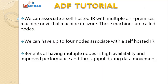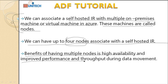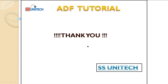We can associate a self-hosted IR with multiple on-premises machines and Azure virtual networks — these machines are called nodes. Setting up IR across multiple nodes gives you the high availability option: if one node is not available, the IR will be served from another node. You can set a maximum of four nodes associated with a single self-hosted IR. The benefit of multiple nodes is high availability and improved performance and throughput during data movement — whether moving data from on-premises to Azure or Azure to on-premises.